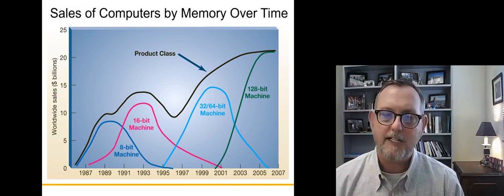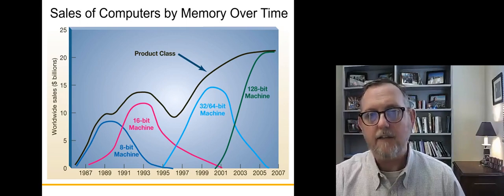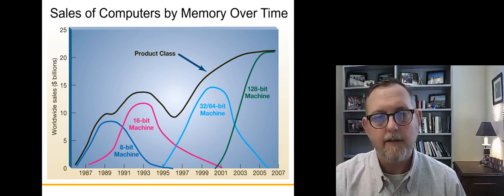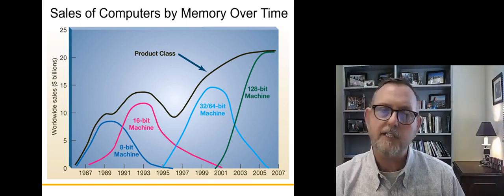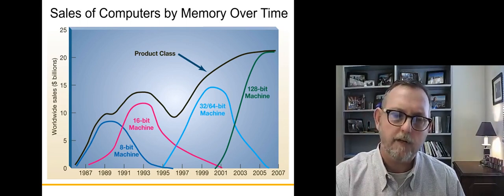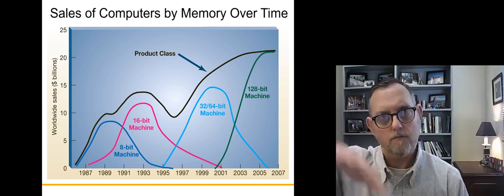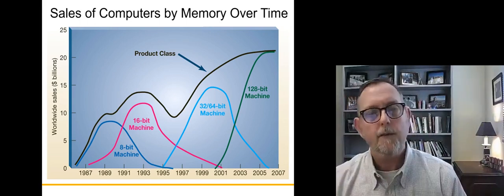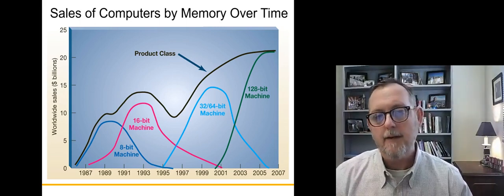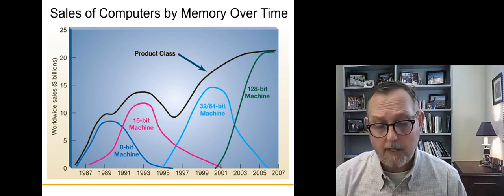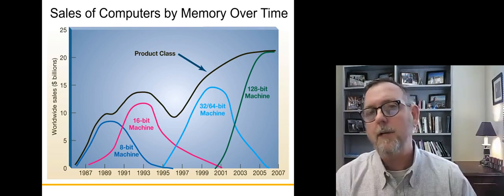So imagine this chart here. This is an older chart and this chart represents memory for computers over a very long period of time. Initially, computers came out with just a small amount of memory. And then memory became more available in a next generation of computers. And so people, instead of continuing to buy the original computer, they bought the new computer instead. And so it sort of started a new sales curve, a new curve was created.